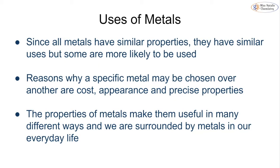Since most metals have very similar properties, they tend to have similar uses, but some metals are more likely to be chosen than others. Sometimes it's because one metal is a better conductor or can be shaped more easily, but sometimes it comes down to cost, appearance, and very precise properties. If two metals have the same physical properties but one is much cheaper, we'll pick the cheaper one. Companies have to consider all of these factors when deciding which metal to use, as metals are very useful in many different ways in everyday life.